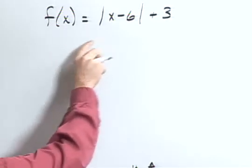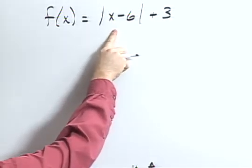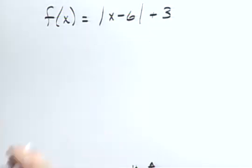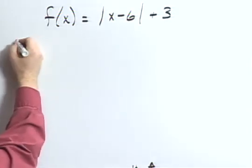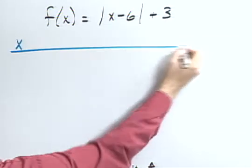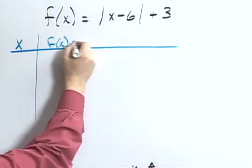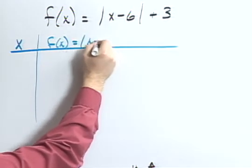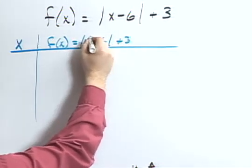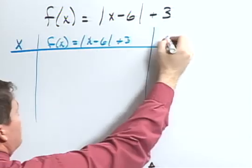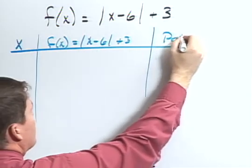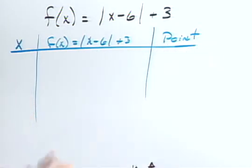Graph the absolute value function and state the domain and range. f of x equals absolute value of x minus 6 plus 3. To do so, let's start with a table. We can have our x's, f of x equals the absolute value of x minus 6 plus 3, and finally my point, or the coordinate, that would result.